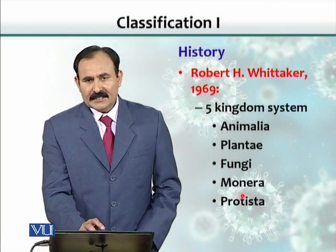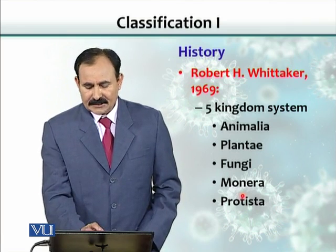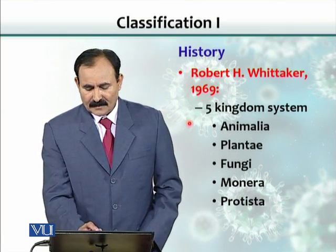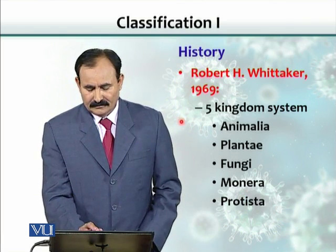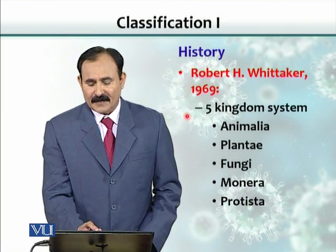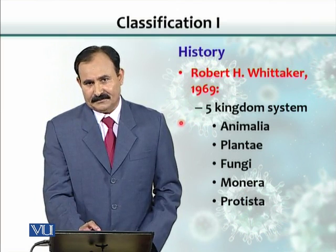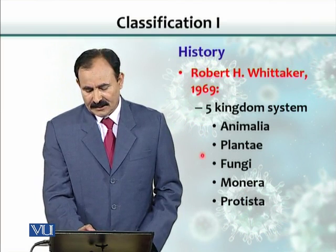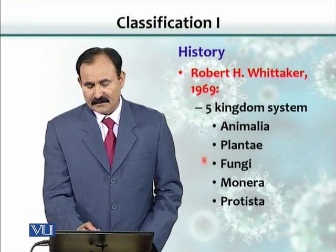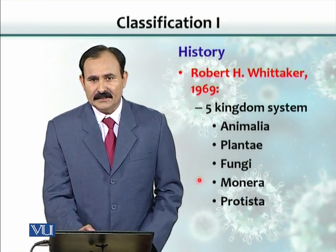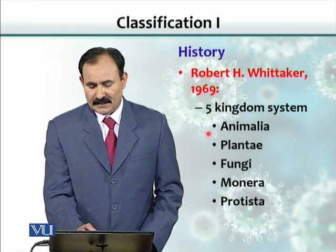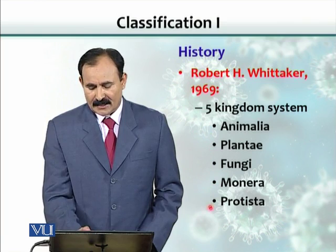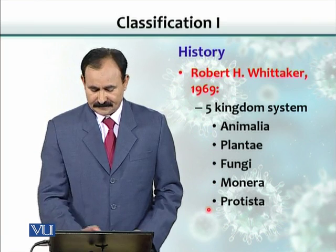Robert Whittaker, in 1969, proposed a five-kingdom system where five different kingdoms were described: Animalia, Plantae, Fungi, Monera, and Protista.